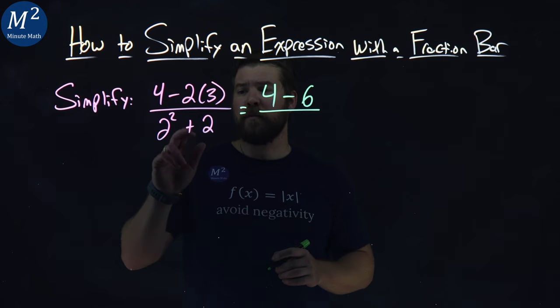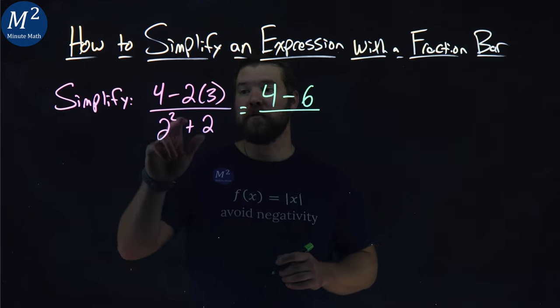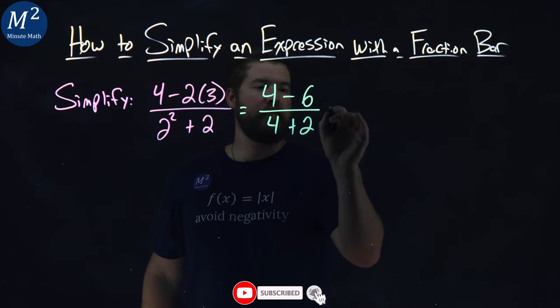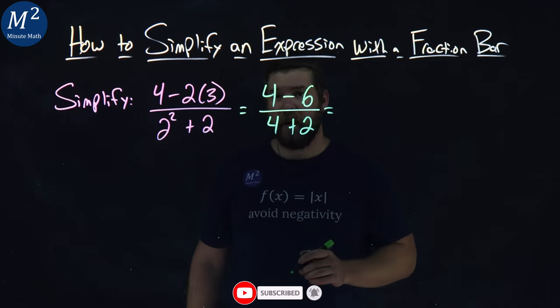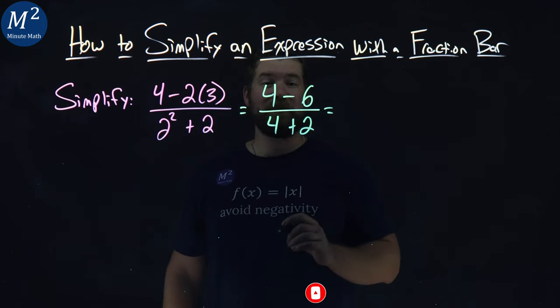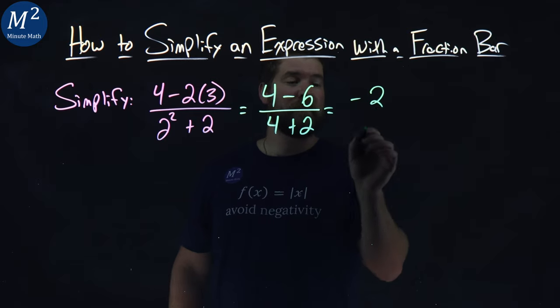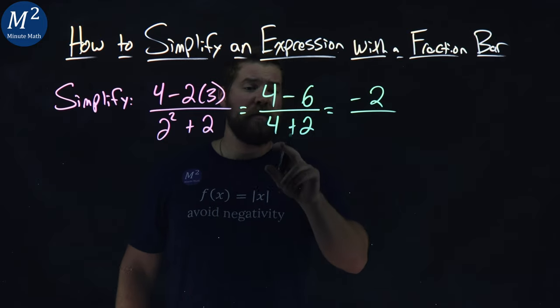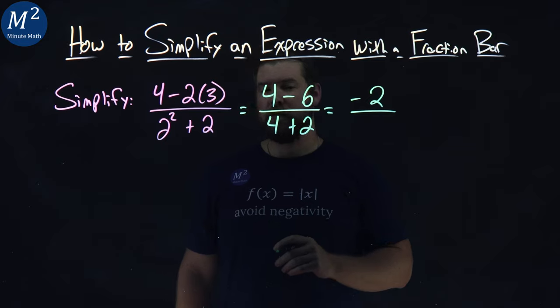Denominator. We have exponents come before addition, so 2 squared is 4 plus 2. Keep on simplifying. 4 minus 6 comes out to be negative 2 in the numerator. The denominator, 4 plus 2, well that's 6.